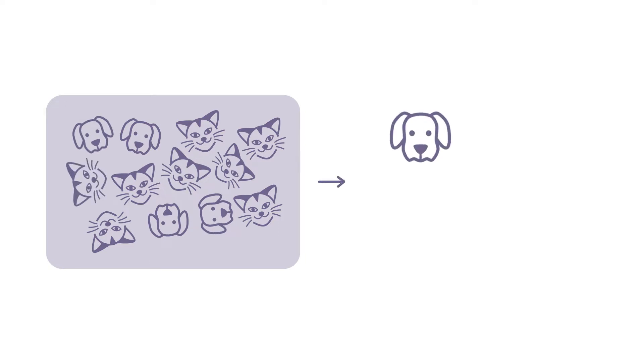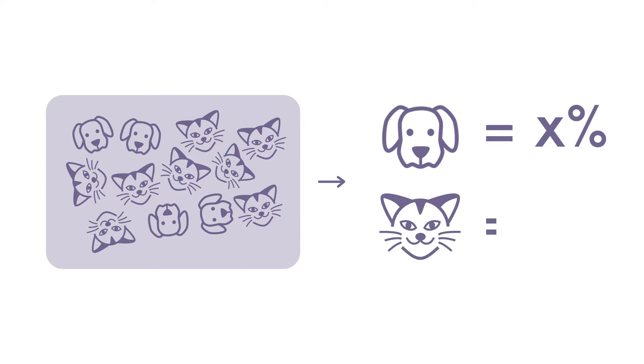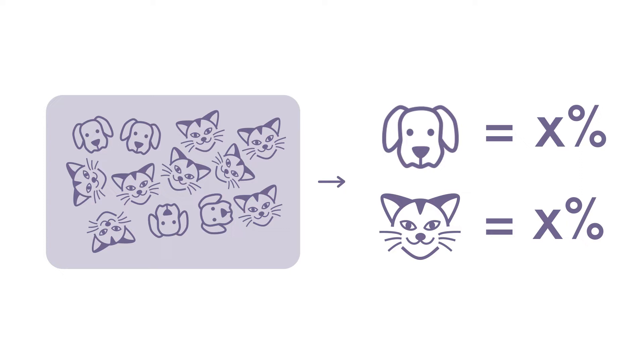Imagine the classical example: you are given a set of images, each of which either depicts a cat or a dog. Instead of labeling the pictures all on your own, you want to use an algorithm to do the work for you. It looks at the whole picture and outputs probabilities for each of the classes it was trained on — in this case, cat or dog.